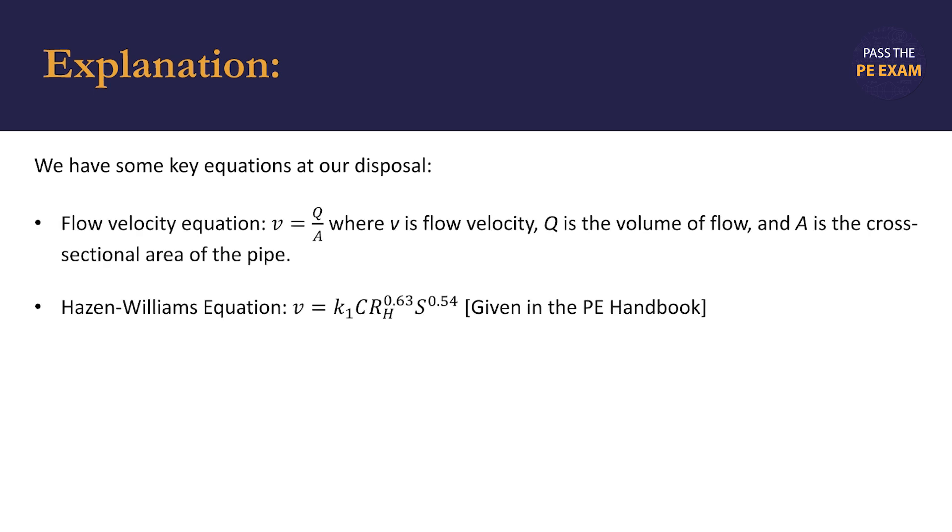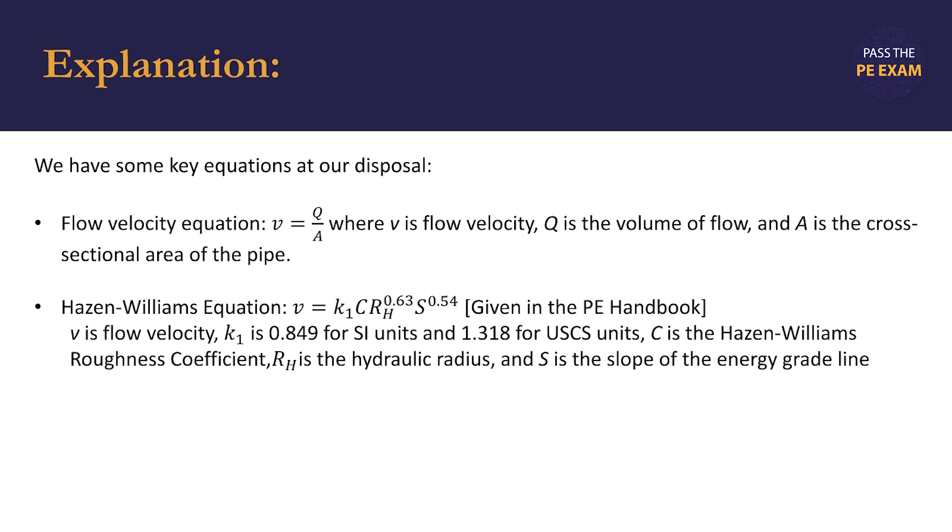And we have the Hazen Williams equation, where v equals k sub 1 times c times r sub h raised to 0.63 times s raised to 0.54. This is given in the PE handbook. v is the flow velocity, k sub 1 is one of two values depending on if we're using SI units or USCS units, so it's either 0.849 or 1.318 for USCS units, c is the Hazen Williams roughness coefficient, which is dictated by the pipe material, r sub h is the hydraulic radius, and s is the slope of the energy grade line.